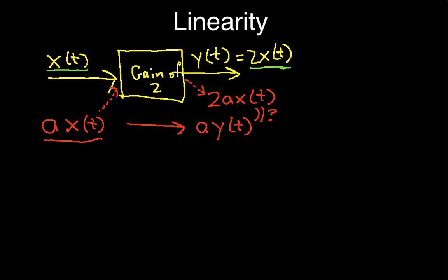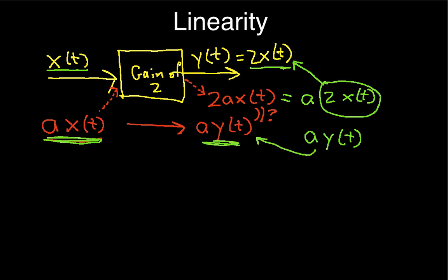So I can actually take this 2 a x of t and write it as a 2 x of t. Right? Everybody believes that from algebra. And you'll notice now that this part of the output is the same as what I defined here as y. So this is indeed equal to a y of t. So what this says is, yes, if I put a x of t in, then I get a y of t out.